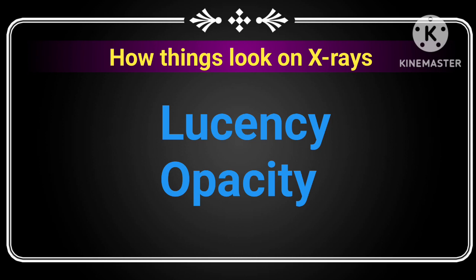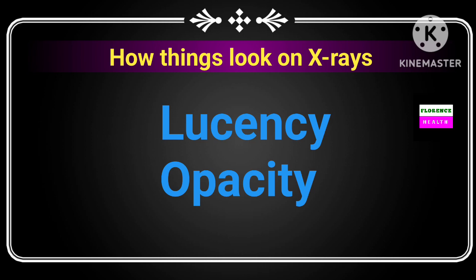On X-ray, two terms are present: lucency and opacity — that means radiolucent or radiopaque. More lucent means more black in color. More opaque means more white in color. Lucency is in favor of less density, and opacity is in favor of more density.